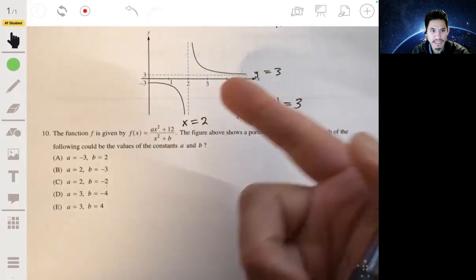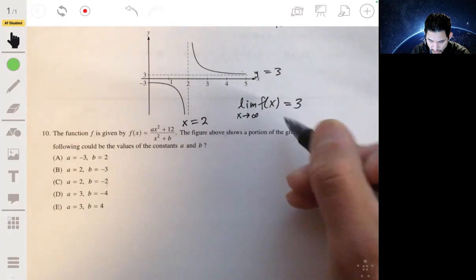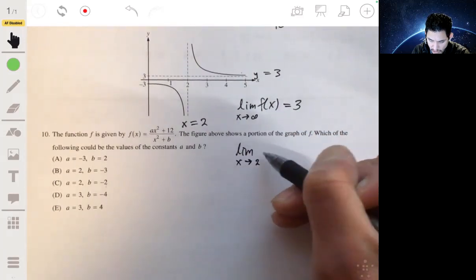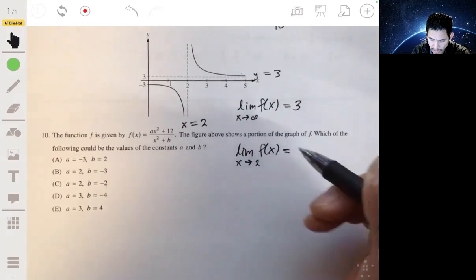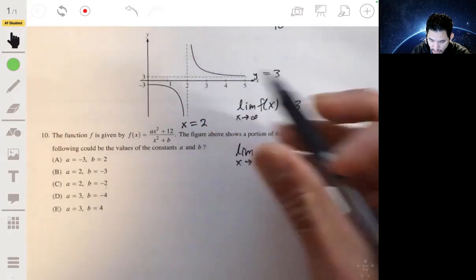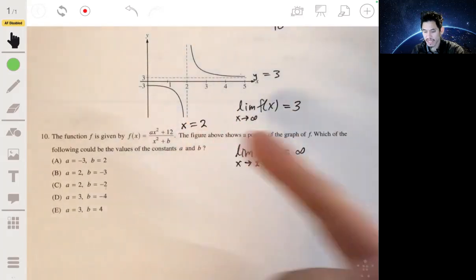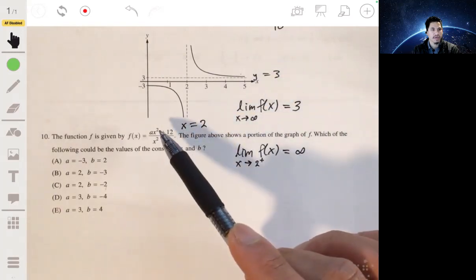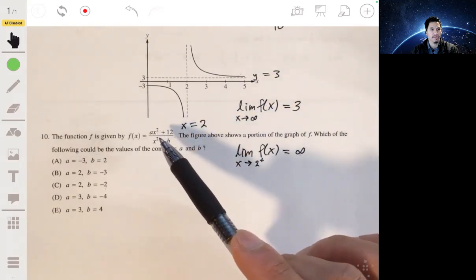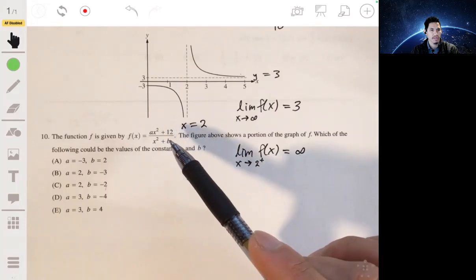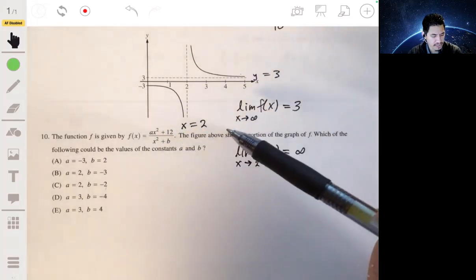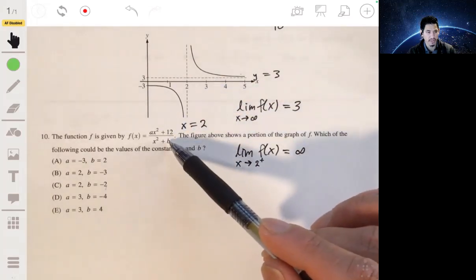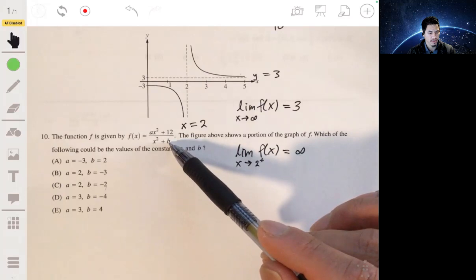So the vertical asymptote is when x approaches that number, so when it's the limit when x approaches two, let's say from the positive side, it would be positive infinity. So the negative side will be negative infinity. Now, if we look, the a is in the numerator and the b is in the denominator. So if you can basically just solve for b, or solve for the value in the denominator, you'll be good.